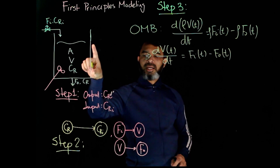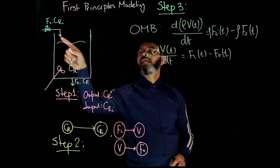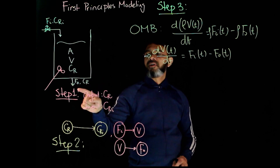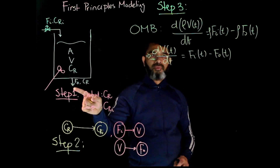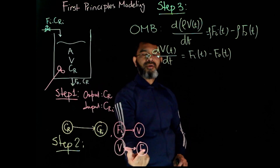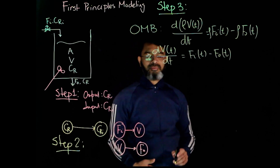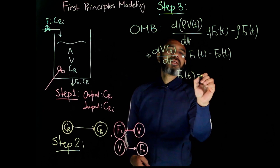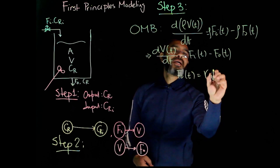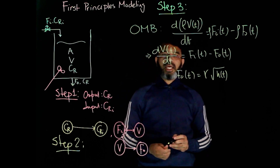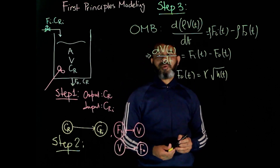Regarding the links: V equals A times h, which is the level of liquid in the tank. We know that if Fi increases, the level of liquid will increase, and that will affect the outlet flow. The link between V and F-naught is the same as h and F-naught, which can be given as F-naught(t) equals gamma times the square root of h(t). These equations are involved, but they do not directly relate CR and CRi.